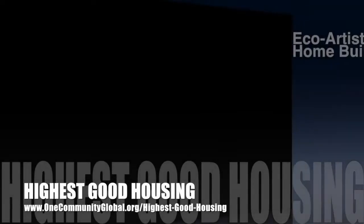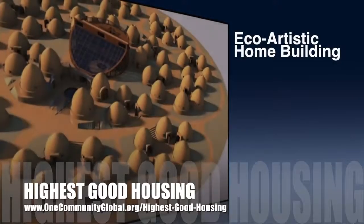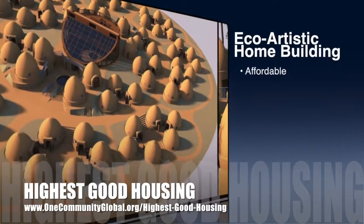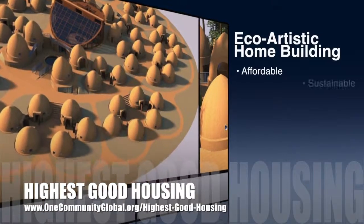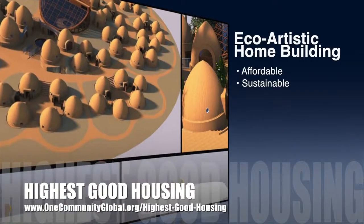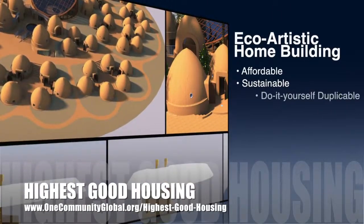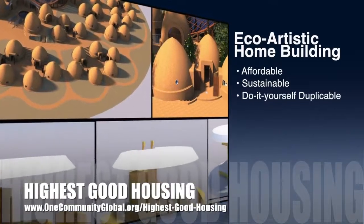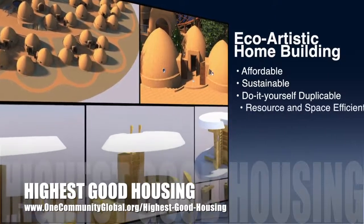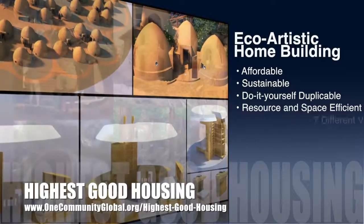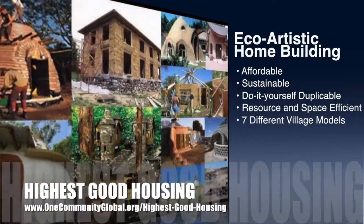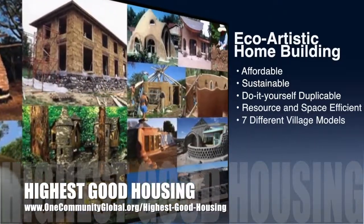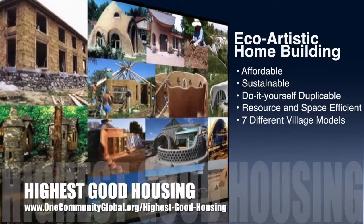The OneCommunity approach to highest good housing is eco-artistic home building that is affordable, sustainable, do-it-yourself duplicable, resource and space efficient, and consists of seven different sustainably constructed village models.